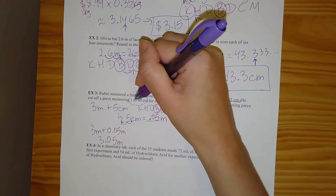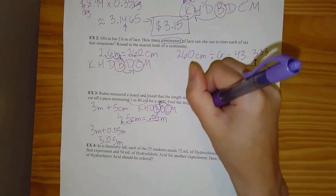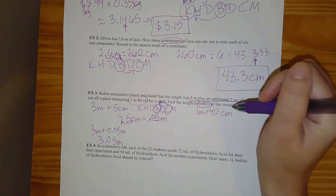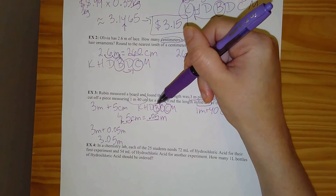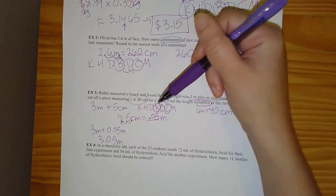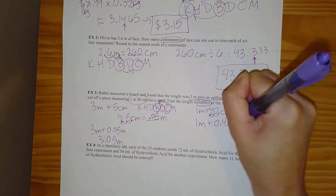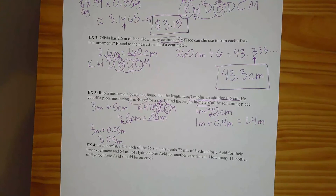The piece he cuts off is 1 meter 40 centimeters, so I'll do the same thing: 1 meter plus 40 centimeters. Converting 40 centimeters to meters — going from centimeters to the base unit of meters, I move my decimal two spaces to the left. So that's 1 meter plus 0.4 meters, which equals 1.4 meters for the shelf piece.